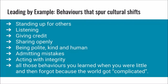Everybody has to take responsibility for their part of the project. The sort of behaviours we expect from our project nodes are the sort of behaviours that you probably learnt when you were in primary school — to empathise with the situations of others, to be able to listen, to give credit where credit's due, to share openly, to be polite, kind and human, to admit our mistakes, and to act with integrity. We hope our nodes will lead by example and help bring openness throughout Warwick.